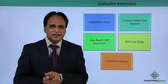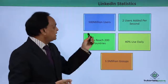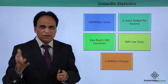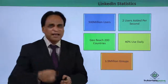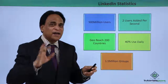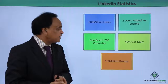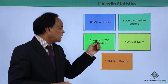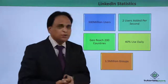Let us see some of the statistics available for LinkedIn. There are about 500 million users on LinkedIn from all around the world. About 2 users are added every single second — that is 2 users per second. LinkedIn has a geo reach of 200 countries or geographies.